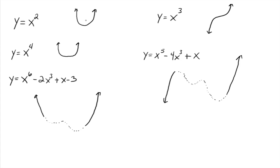So y equals x squared rises to the left and rises to the right. Whereas x to the sixth minus 2x cubed plus x minus 3 also rises to the left and rises to the right. The difference is the degrees of the polynomials on the even side are all even degree, whereas the polynomials on the odd side are all odd degree. The degree of the polynomial being even or odd, along with the sign of the leading coefficient, is going to help you determine the end behavior. We're going to generalize this on the next page.